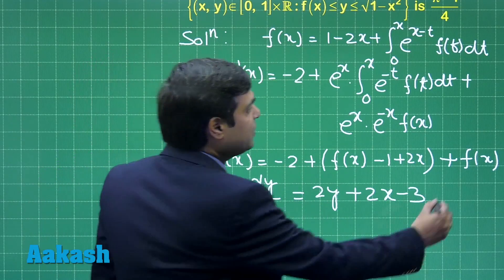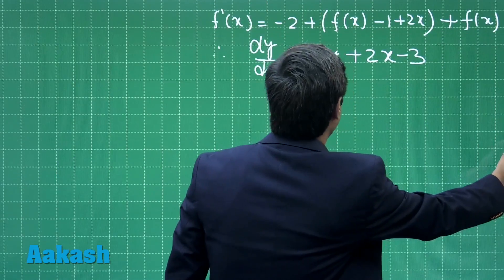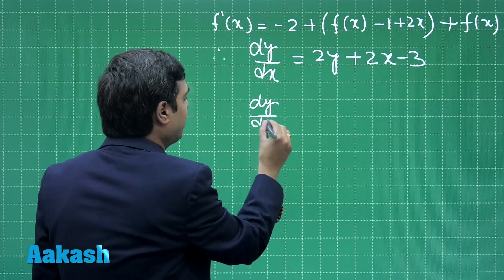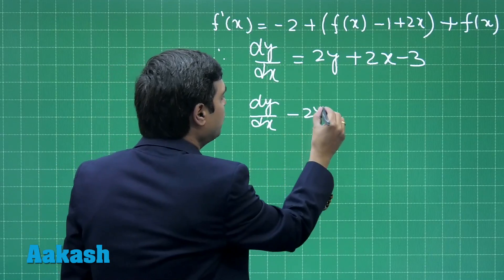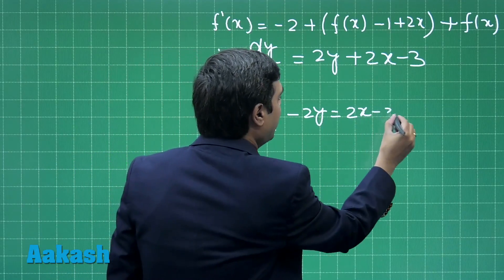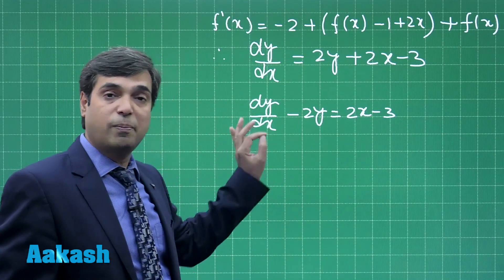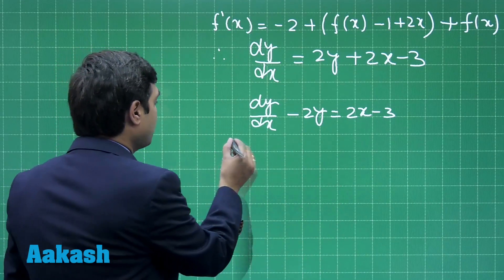We get a differential equation which is linear as dy/dx minus 2y is equal to 2x minus 3. Its integrating factor is clearly e to the power minus 2x.